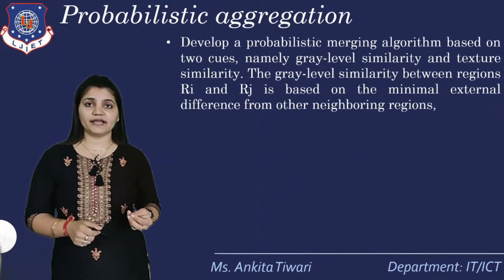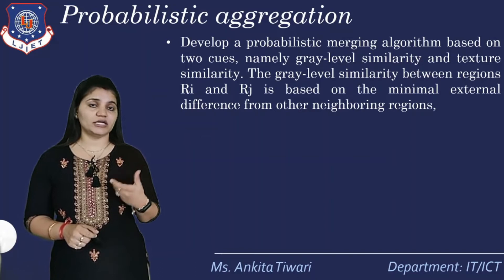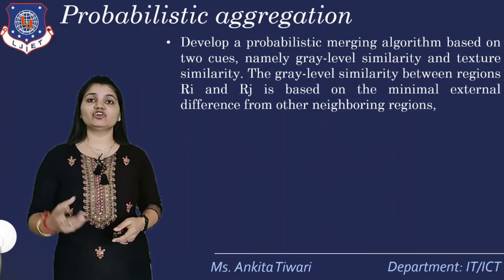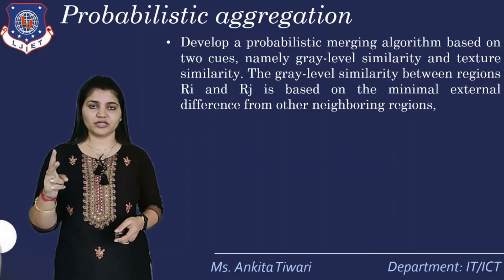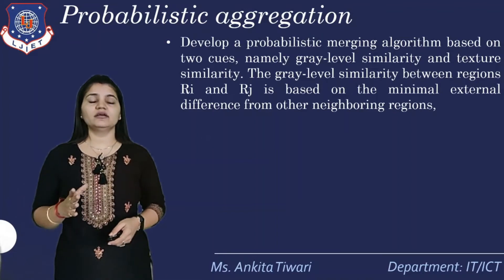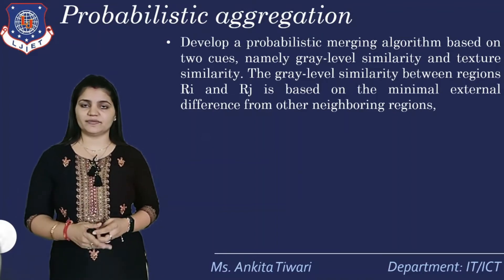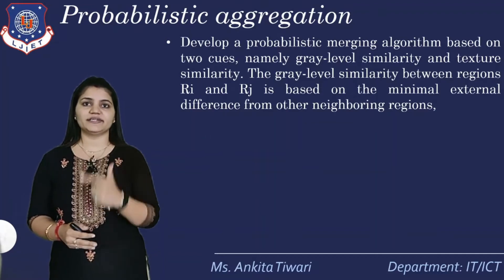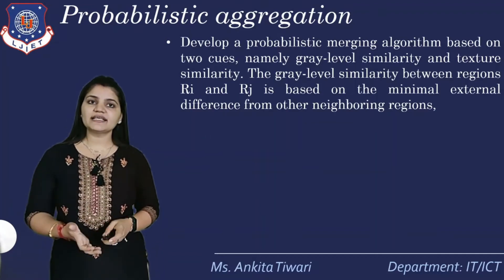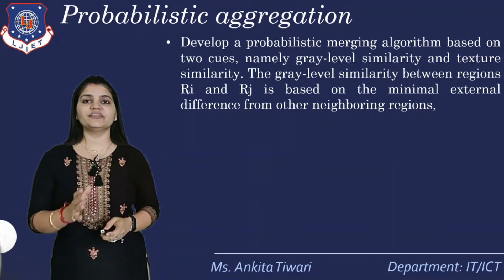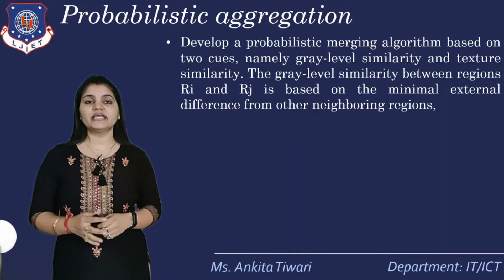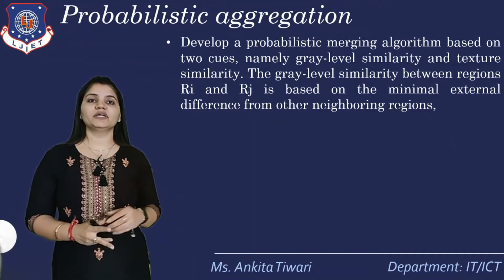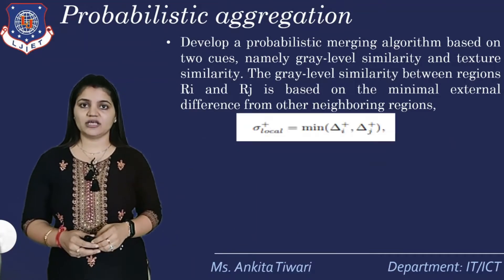Now probabilistic aggression is also a merging algorithm with respect to graph based segmentation, which is based on two cues: namely level similarity — that is grayscale similarity — and texture similarity. So it has the properties of grayscale similarity and texture similarity. The grayscale similarity between regions Ri and Rj is totally based on the minimum external differences from other neighboring regions, which is defined by tau, that is a local value equal to the minimum of delta(i) plus the number of iterations, and delta(j) plus the number of iterations for the j value.